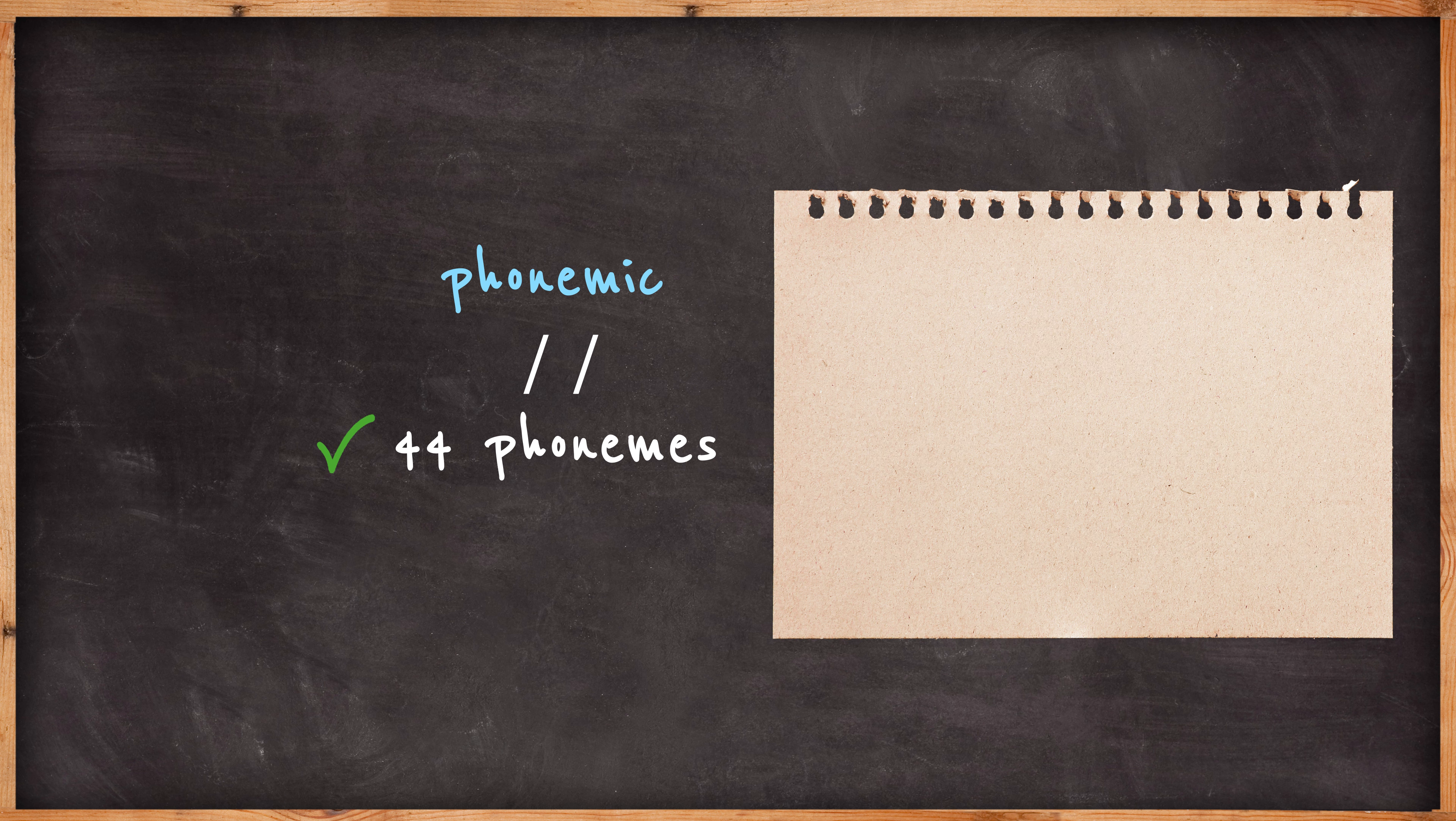Phonemic transcriptions are really helpful, especially in a language with a strange spelling system like English, because they will tell you that the A in these words is different each time: wasp, hand, ball, park, about, late.